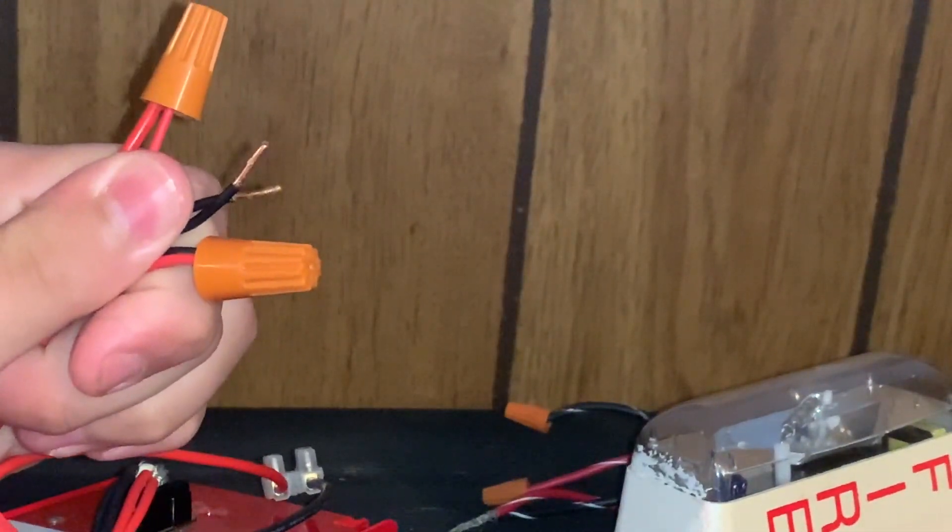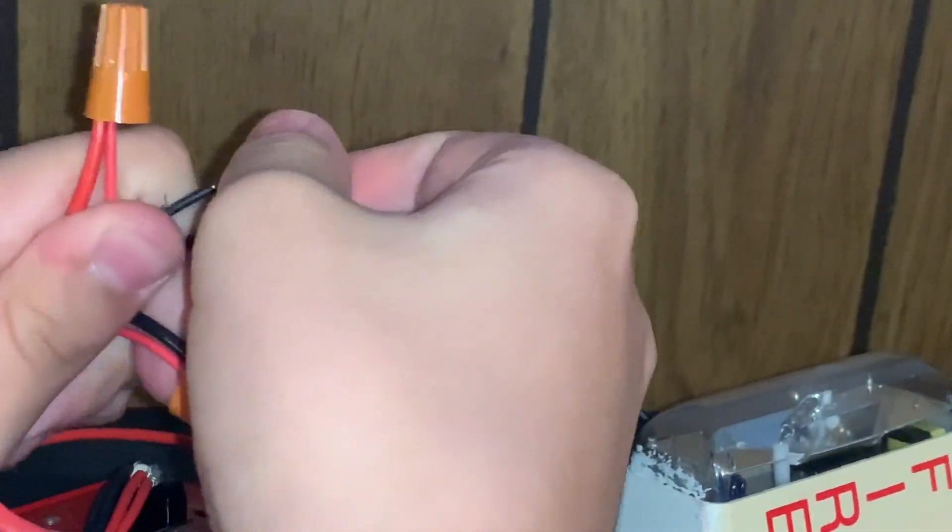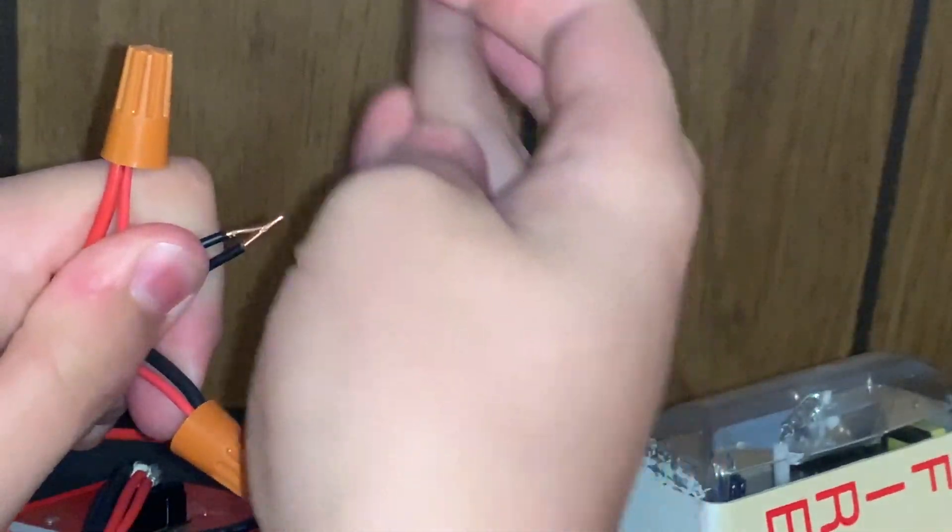Now you splice the two negatives together. Basically what this is doing is breaking the connection until the pull station is pulled, just like you would with any normal pull station.